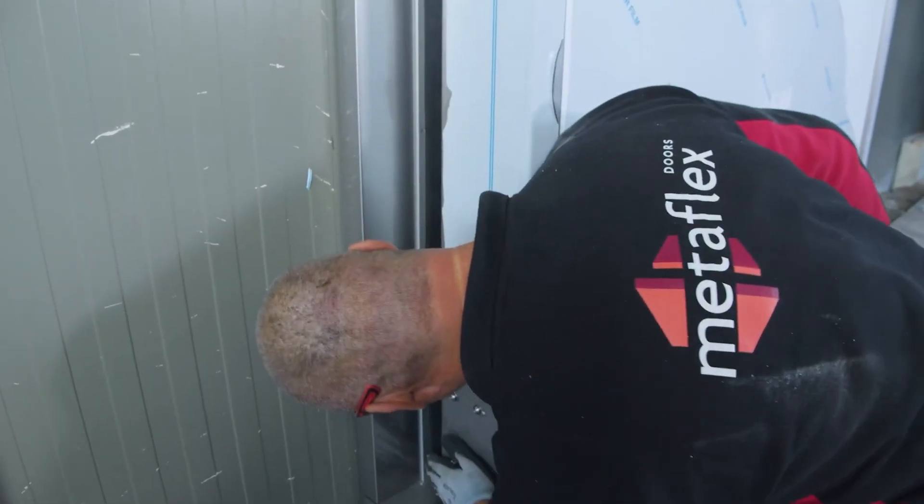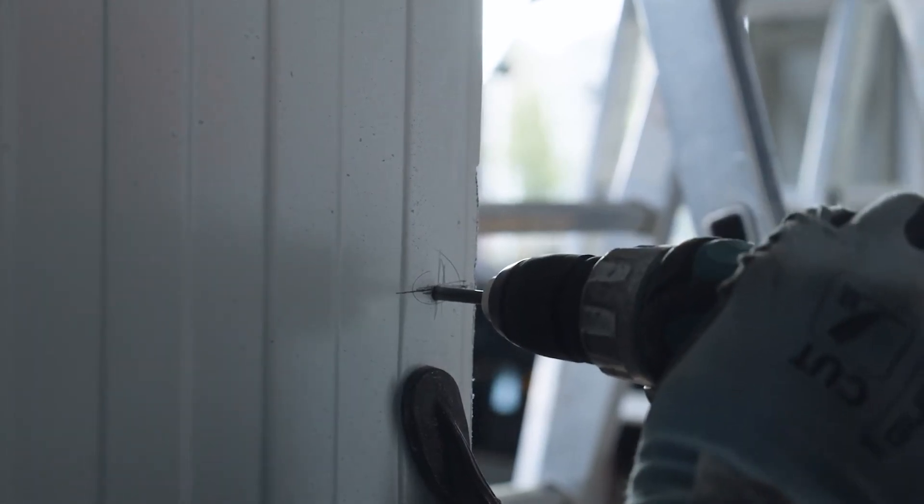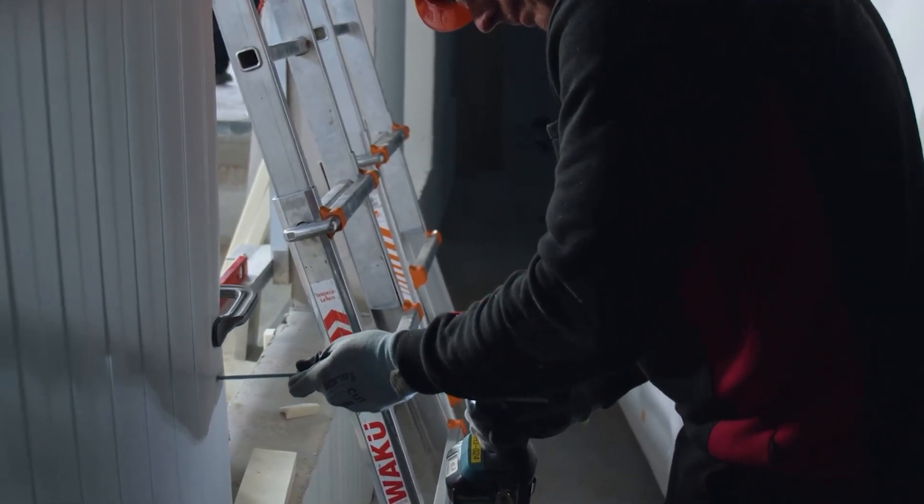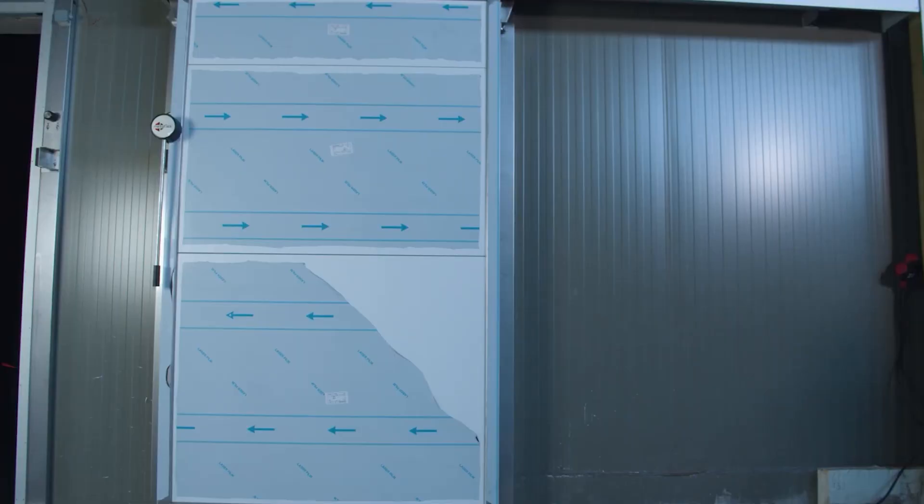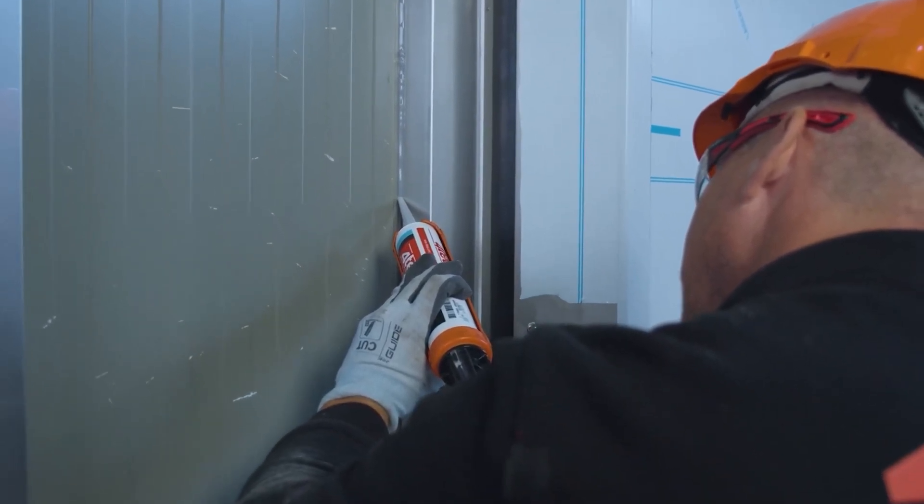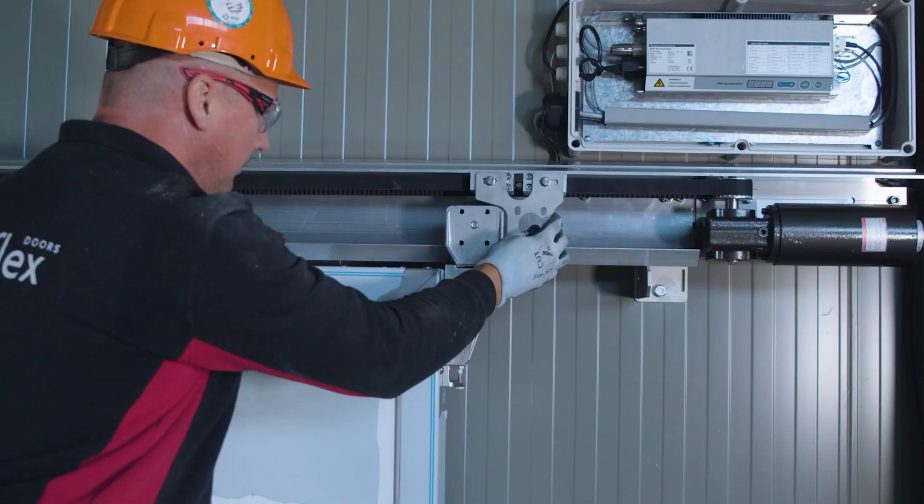Test the functionality and sealing. Fully screw in the frame. Check if the sealing is functional all around. If the sealing is not functional, adjust the frame. Apply the sealants between the wall and the frame. Install the operation.